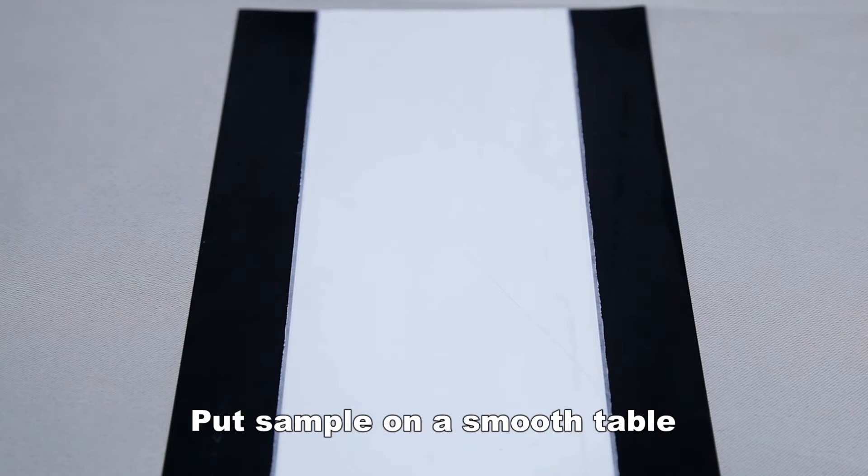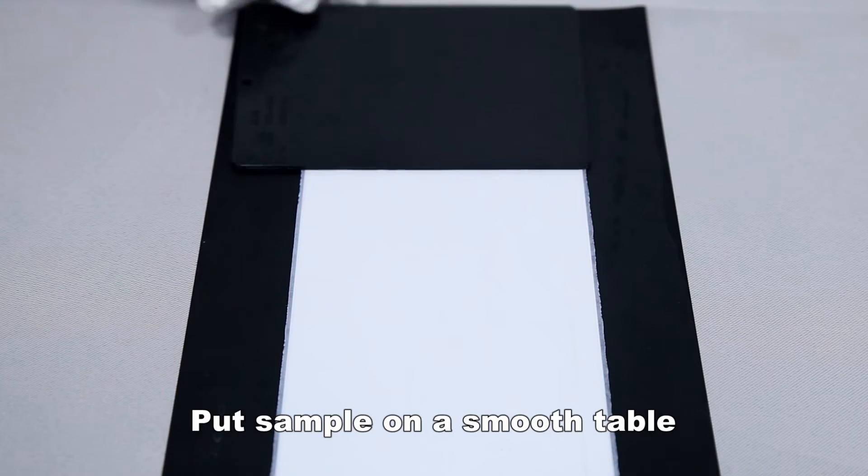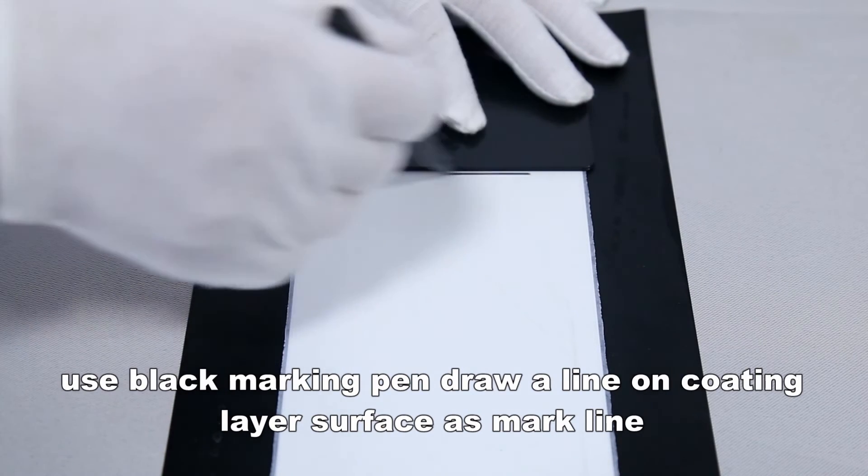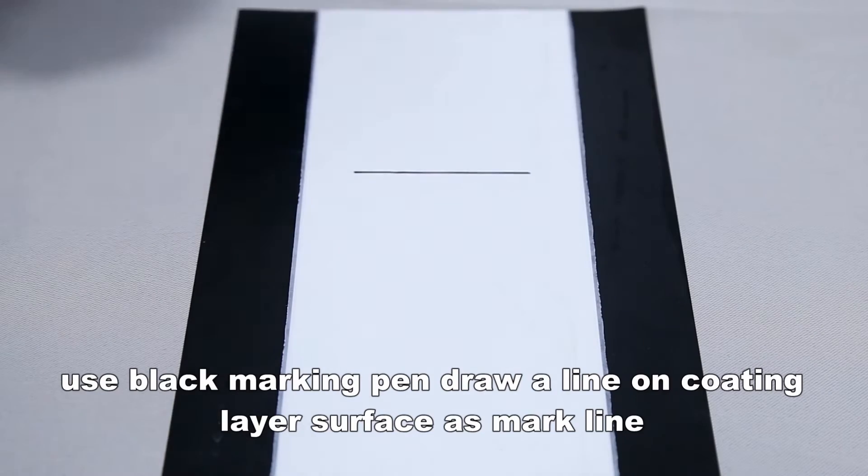Put the sample on a smooth table. Use a black marking pen to draw a line on the coating layer surface to mark it.